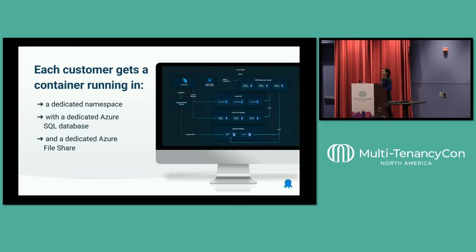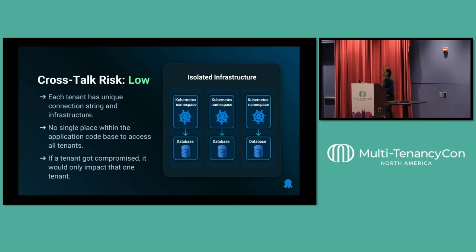Each customer gets a container running in AKS, and they get a dedicated namespace with a dedicated Azure SQL database and a dedicated Azure file share. The reason we set up customers this way is to lower the cost of crosstalk, because each tenant has a unique connection string and infrastructure. There is no single place in the application code where someone can access all tenant data, and if a customer gets compromised, it will only impact that single client.